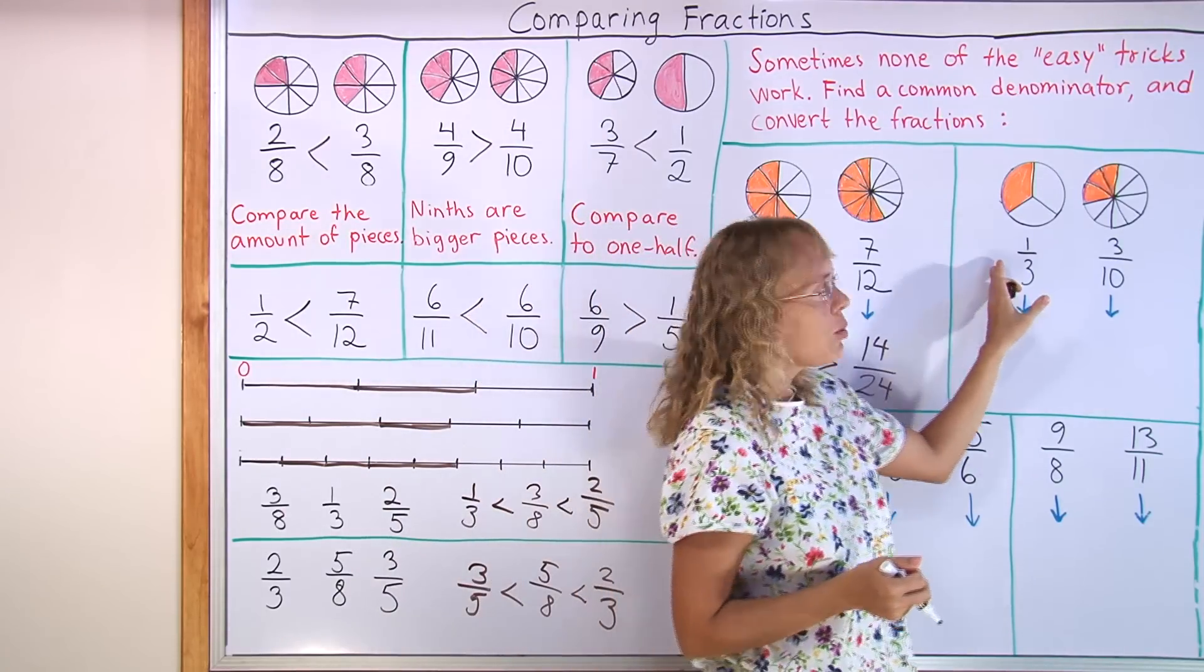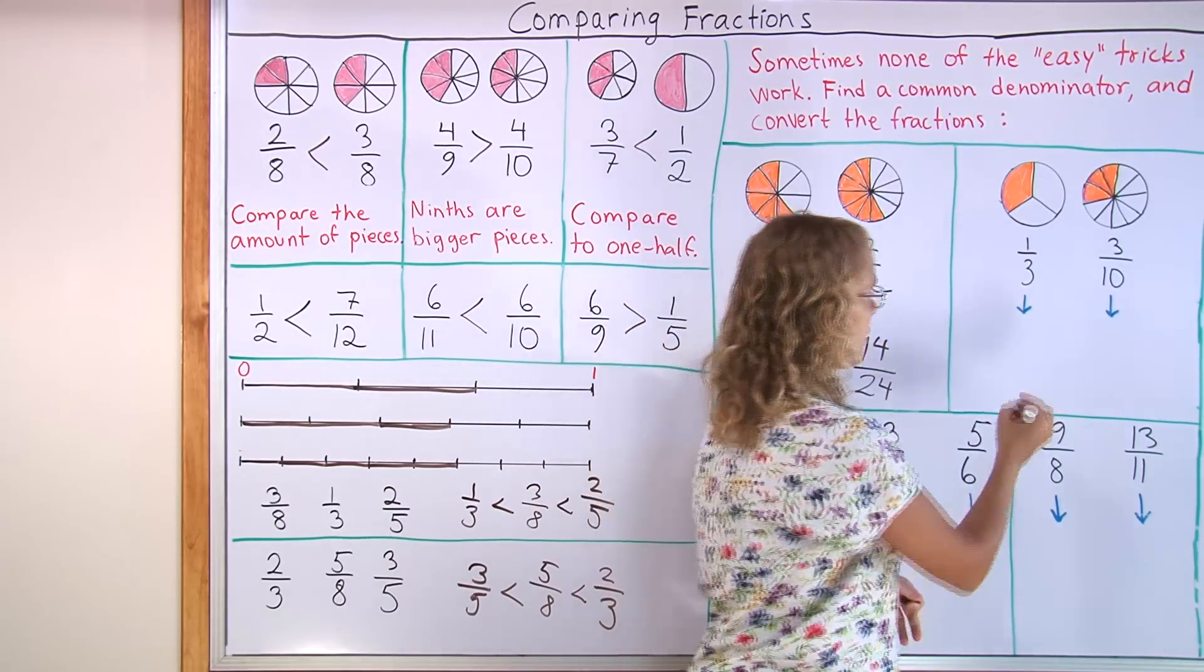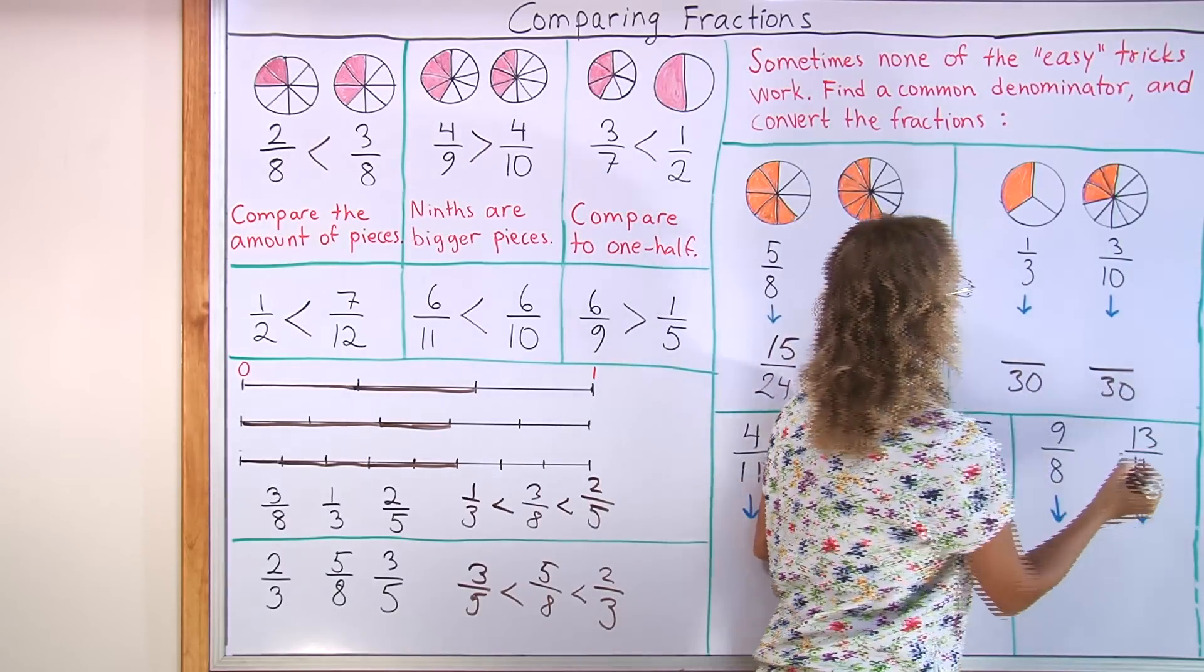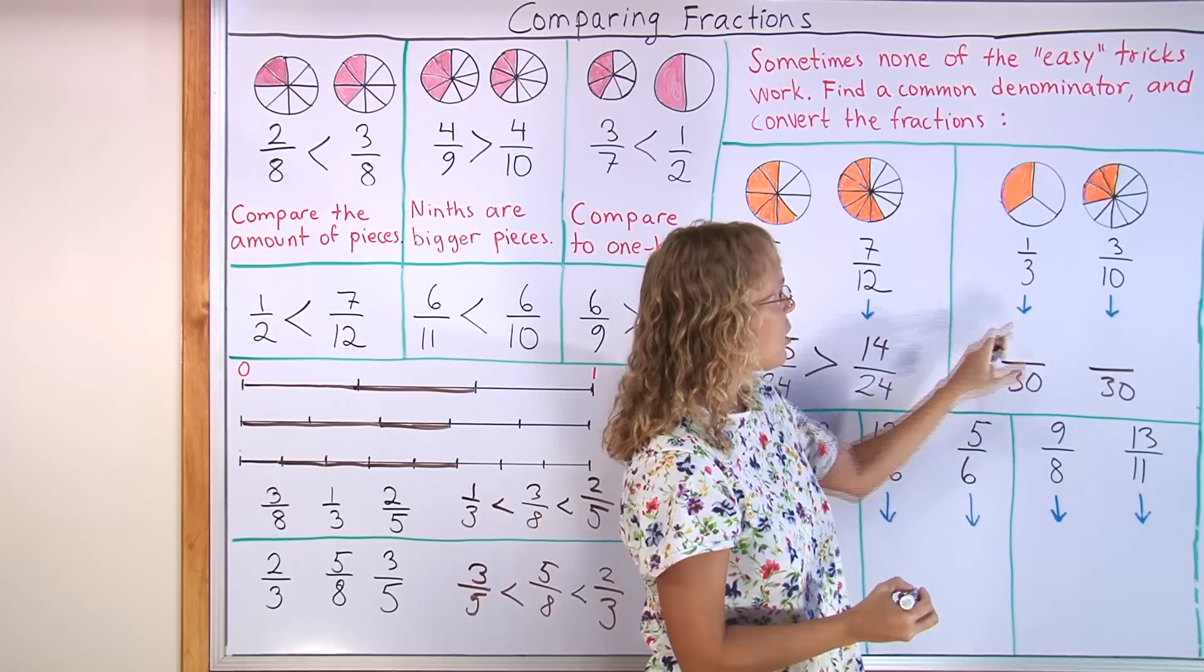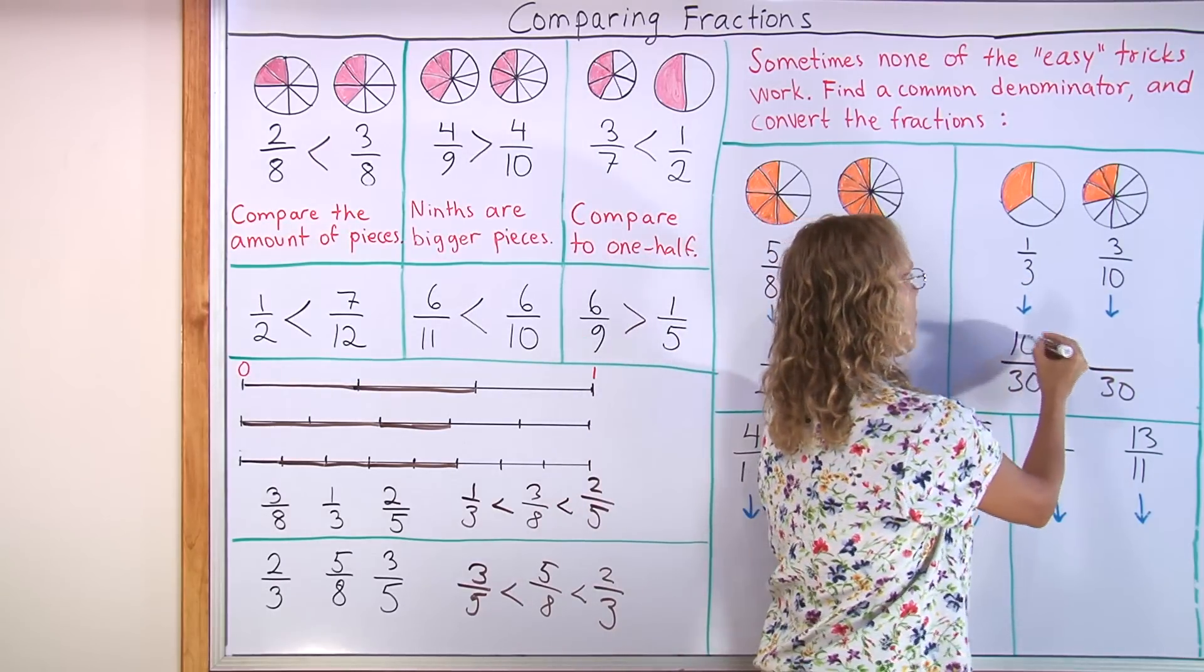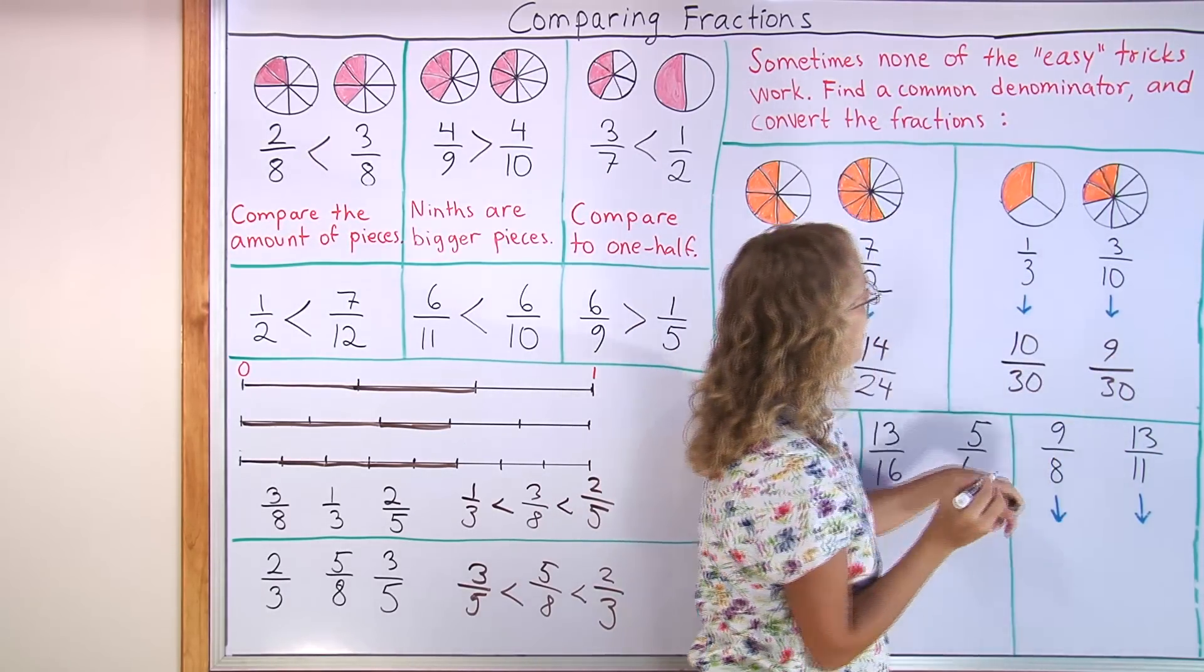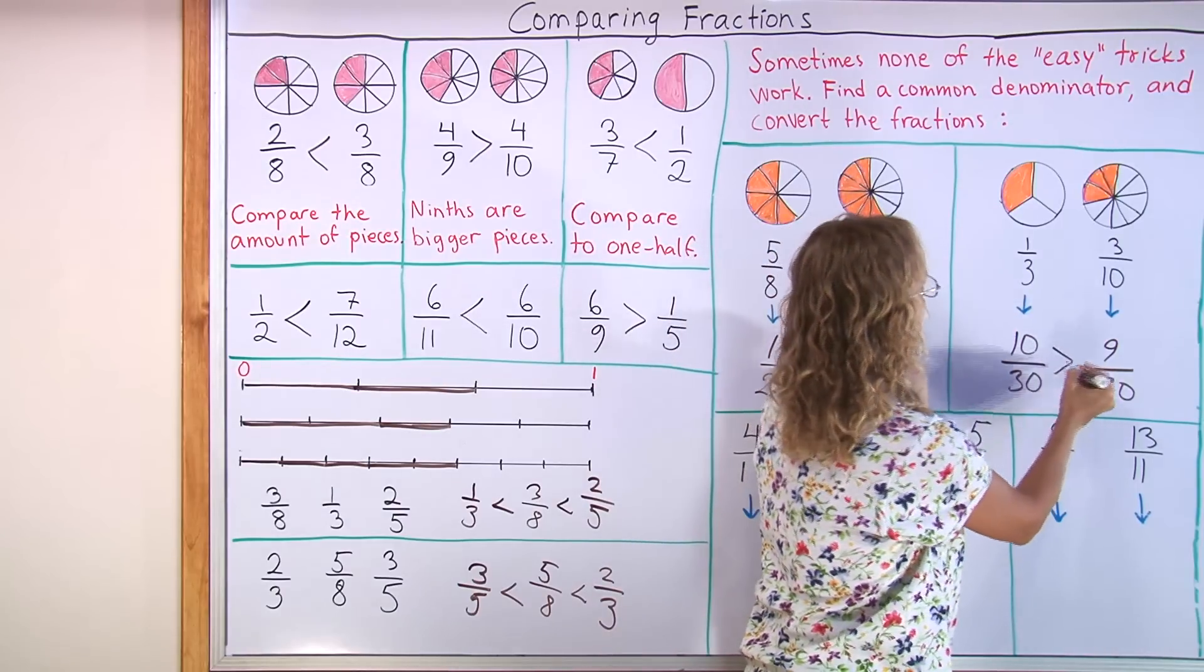Here I'm going to use the common denominator of 30. Just simply 3 times 10. Now I go 3 times 10. So 1 times 10. And 10 times 3. So 3 times 3. Again, the fraction on this side is greater.